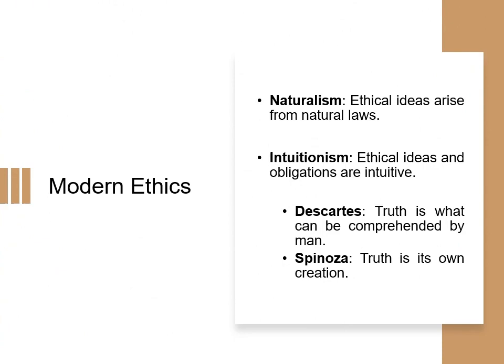Moving on to the modern era, new theories of ethics came up. We start with naturalism, which believes that ethical ideas come from natural laws. In a nutshell: if an action had a result A, then it is morally good, and if it had a result other than A, then it is morally bad. However, the nature of A can be anything, and therefore naturalism has been dismissed by many philosophers.